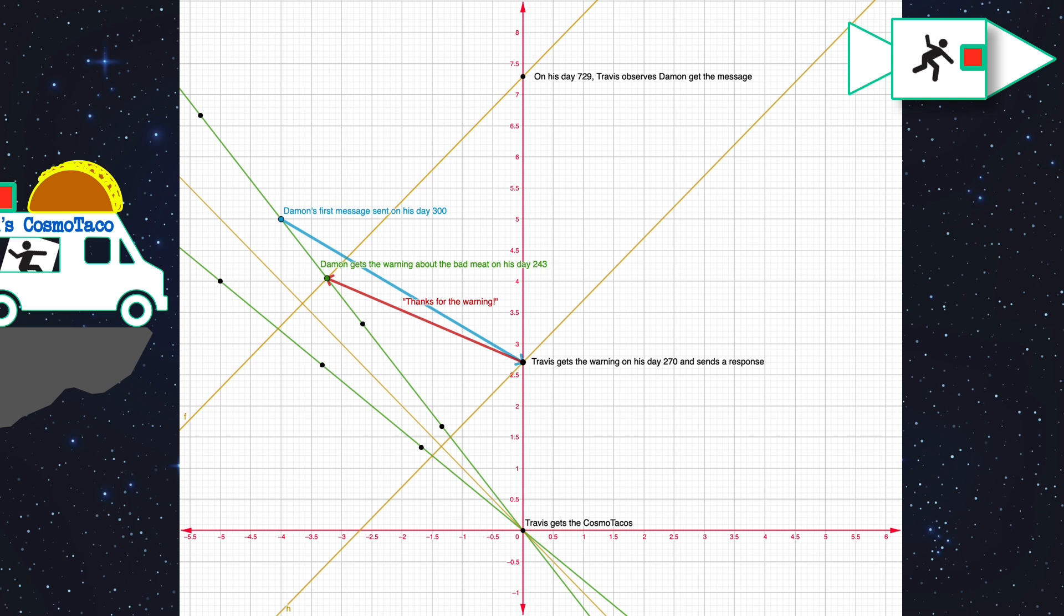Damon sent the message on his day 300. Travis got a message and responded on day 270. Damon got a response to his message on day 243. They can agree that all the events had happened, but the ordering is wrong because as soon as Damon gets the message in 243 days, he says, wow, there's going to be some bad meat. I'm not going to eat it. So he's going to throw it out the airlock, and the transnational mega donkeys are going to eat it. And so therefore, he will never send the message 57 days later, because he will never get sick. And that stops the conversation from ever happening.